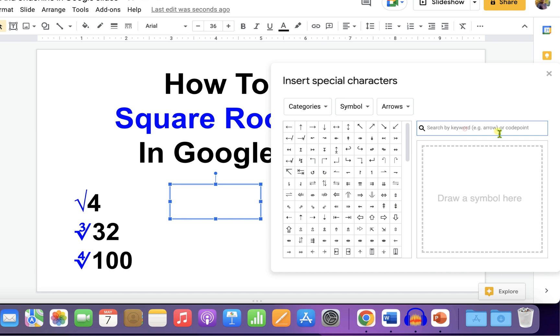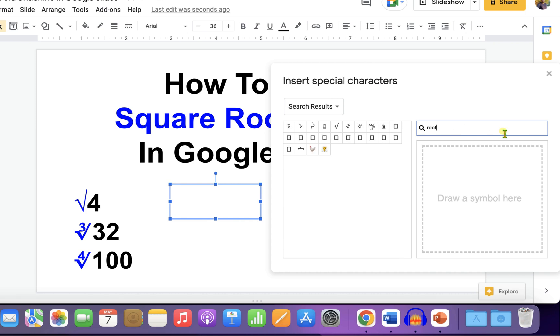You will see the search box here. Just type root and you will see the roots. So, this is a square root. Just click on it to insert it.